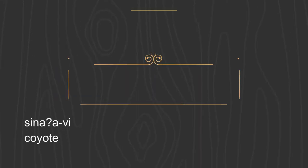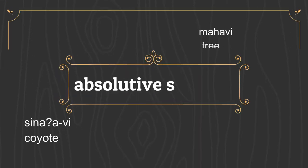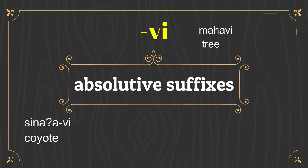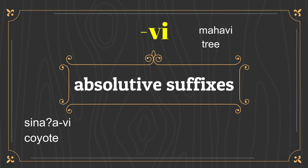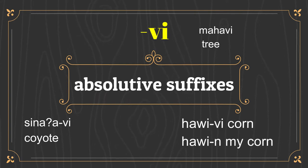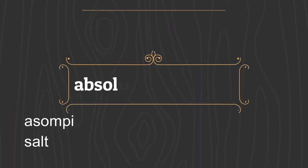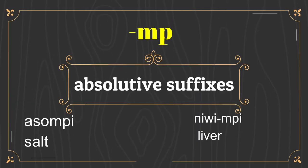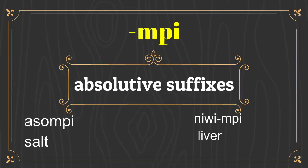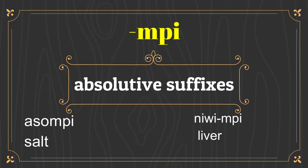Further examples include: siinatvi, meaning coyote; mojave, meaning tree; hawivi, meaning corn; hawin, meaning my corn; umpi; asompi; salt; niwimpi, meaning liver.